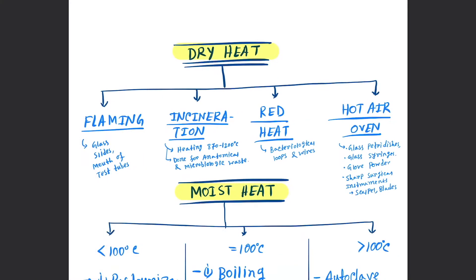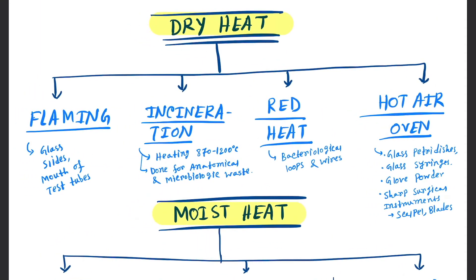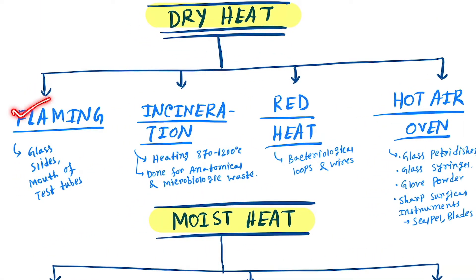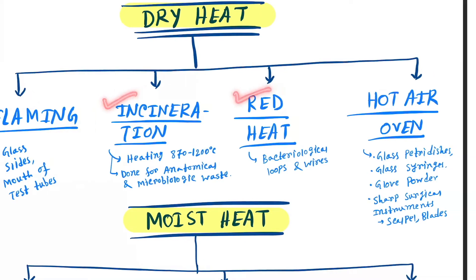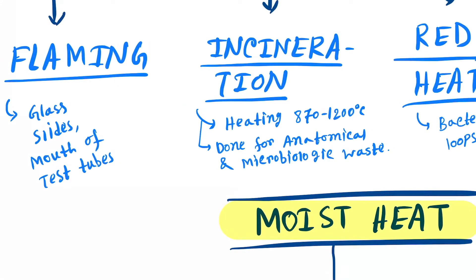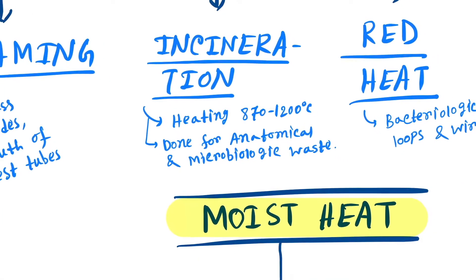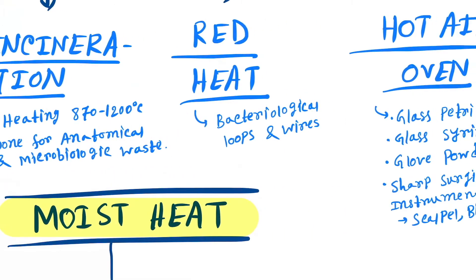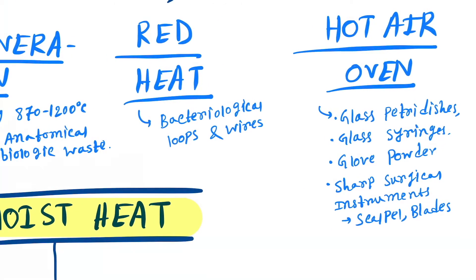Dry heat is of four types. First is flaming - we use flaming for glass slides and mouths of test tubes. Next is incineration: heating at 870 to 1200 degrees Celsius, done for anatomical and microbiological waste. Next is red heat for bacteriological loops and wires. Then hot air oven: we use it to sterilize glass petri dishes, glass syringes, glove powder, and surgical instruments like scalpels and blades.